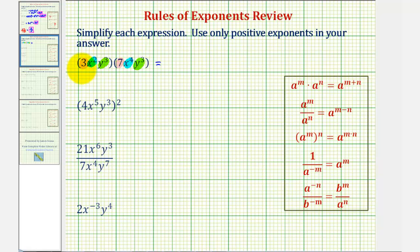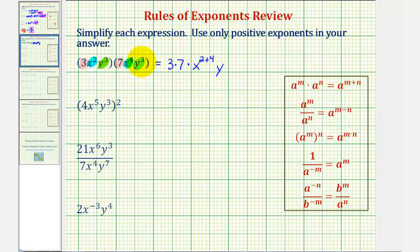So we'd have three times seven, times x to the second times x to the fourth — when multiplying with the same base we add the exponents, so that would be two plus four — and then y to the third times y to the third would be y to the power of three plus three. This simplifies to twenty-one x to the sixth, y to the sixth.